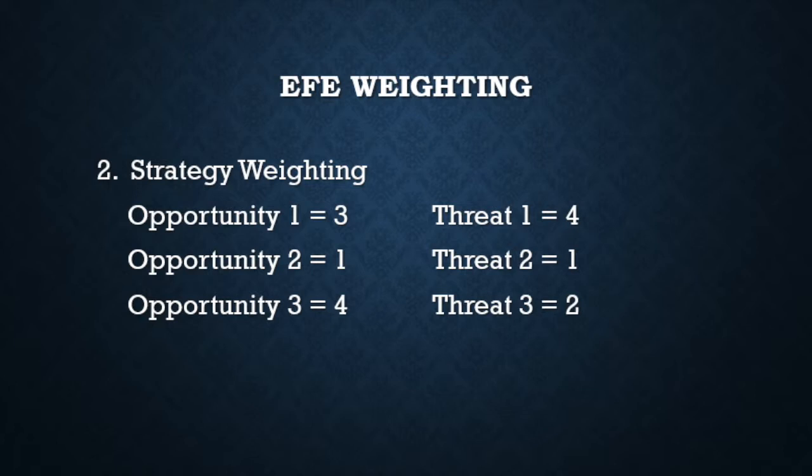After the initial weights have been completed, a second round of weighting is applied to each of the opportunities and threats selected. This second weighting is called the Strategy Weight. This is determined by the user — how important each of the opportunities and threats is to the firm's strategy going forward. This Strategy Weight is a number 1 through 4, with 1 being lowest importance and 4 being the highest. The user may apply these weights as needed, as there is no cap on the sum like in the first weighting.